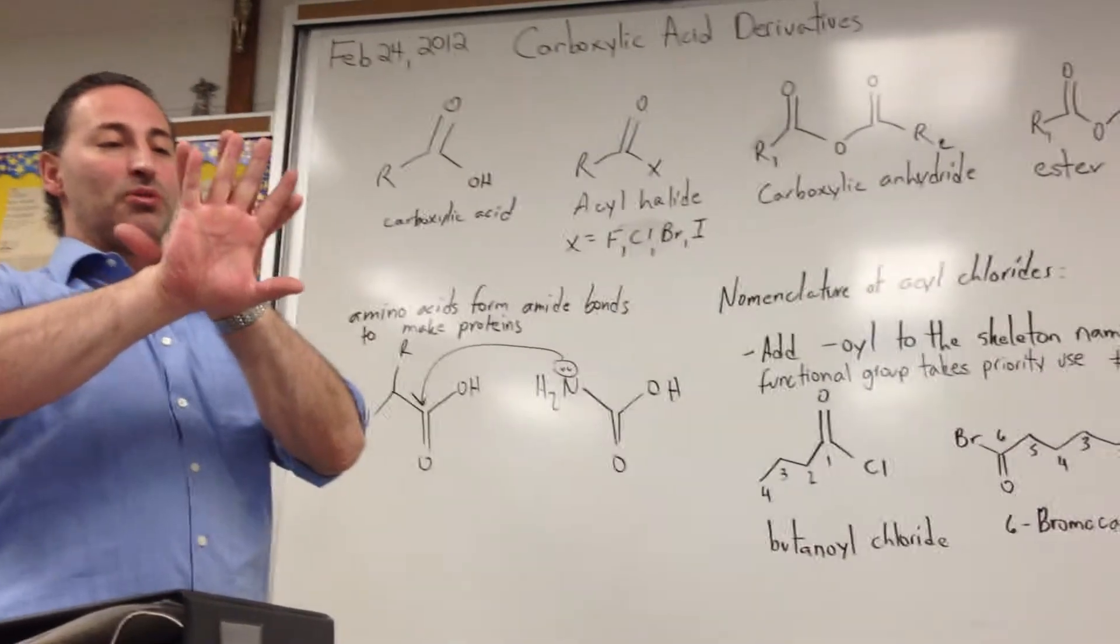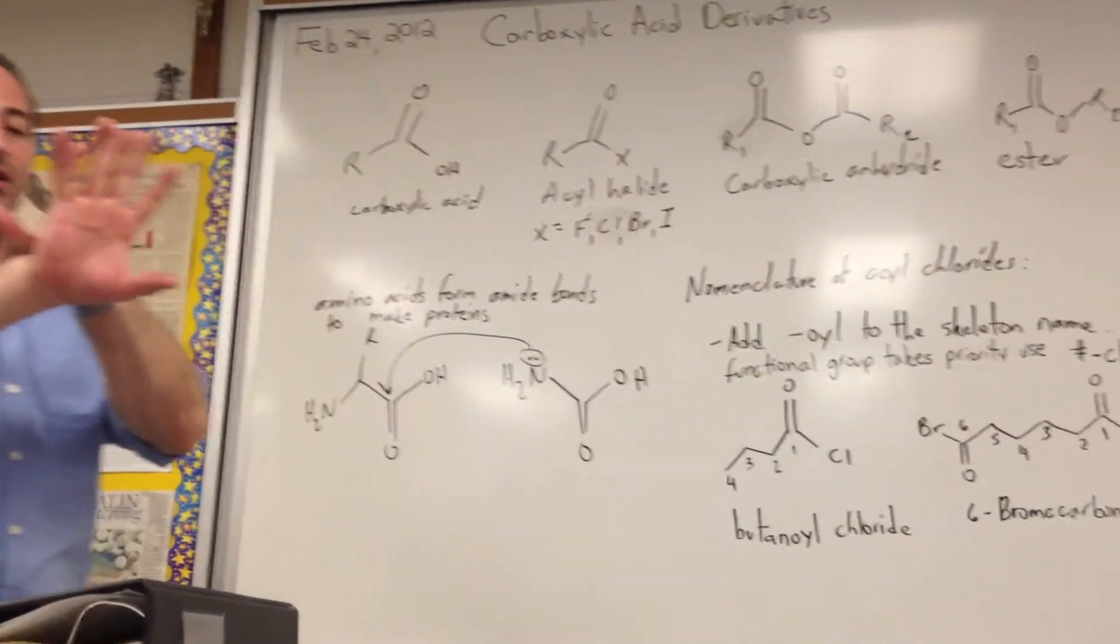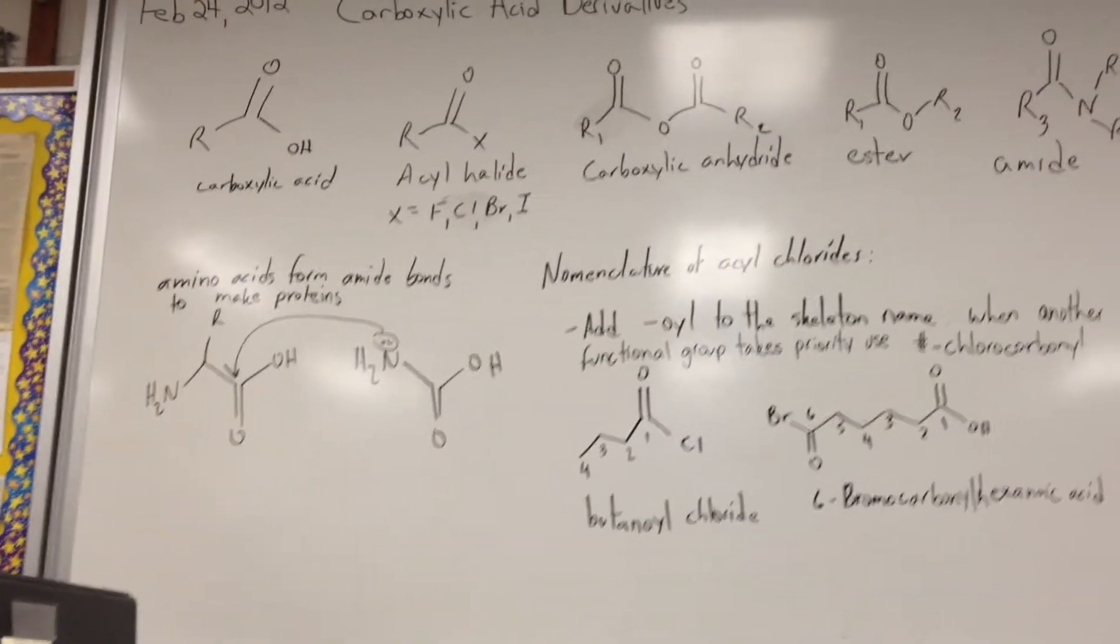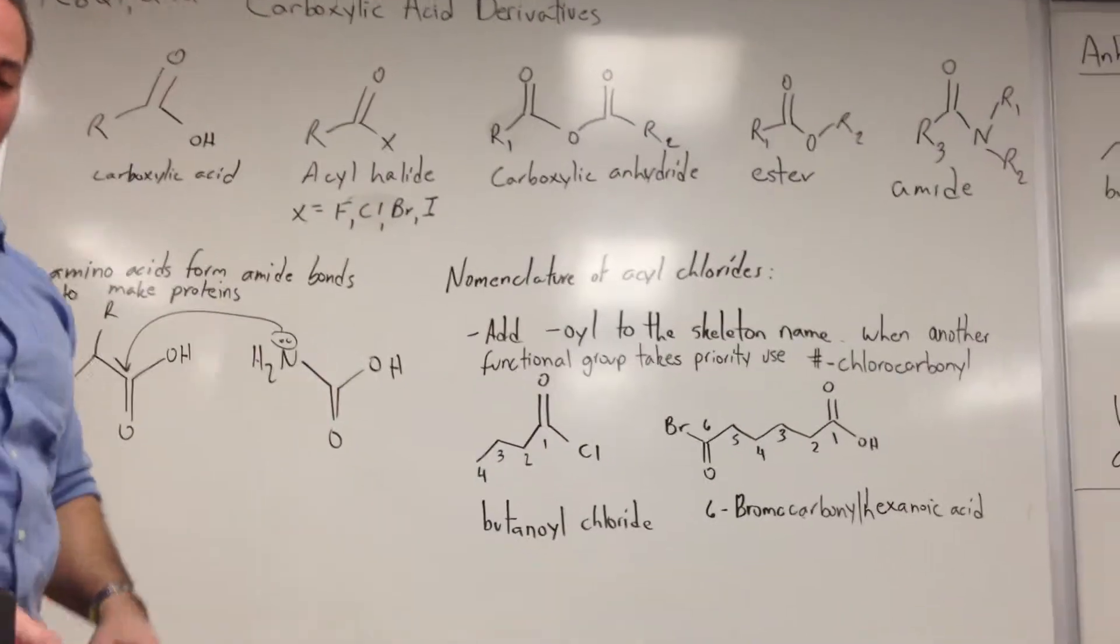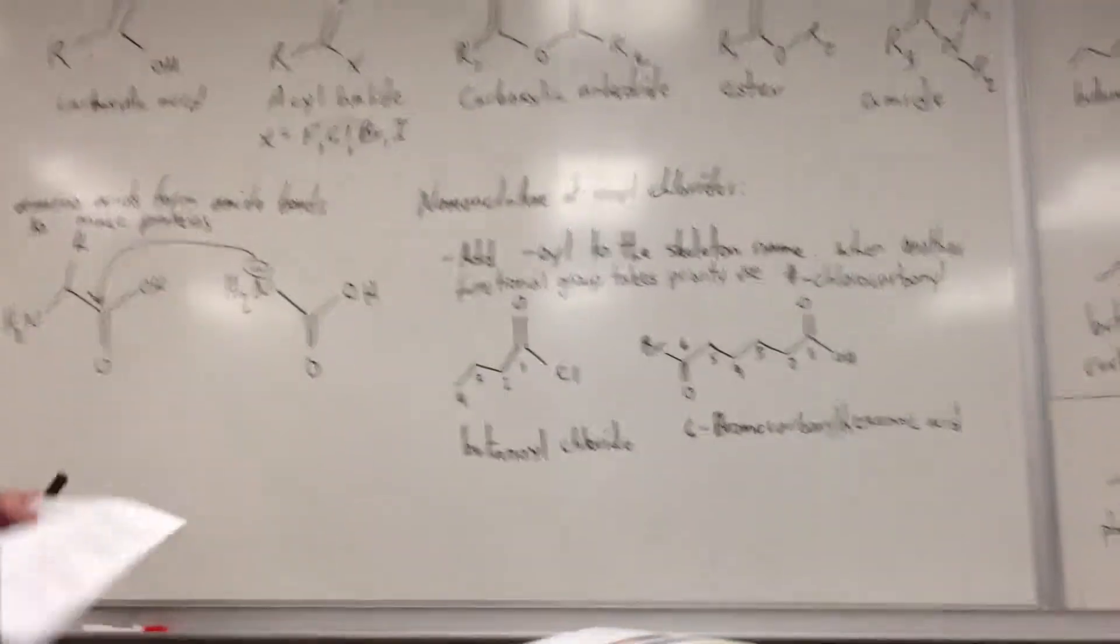They look like mirror images, but if you try to superimpose them, they're non-superimposable. The thumbs appear on the wrong end. That's called enantiomerism. That's something you learn in Organic Chemistry 1 or 2.